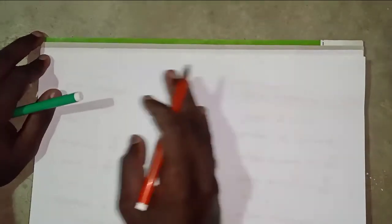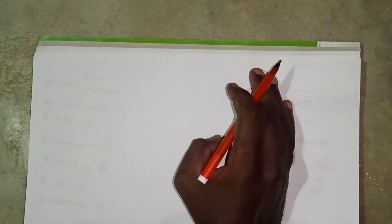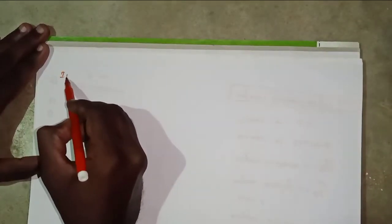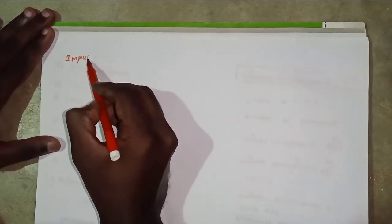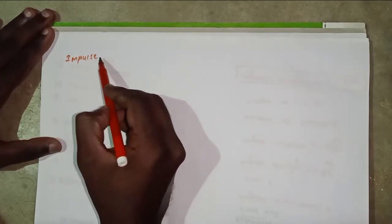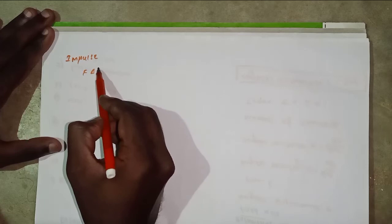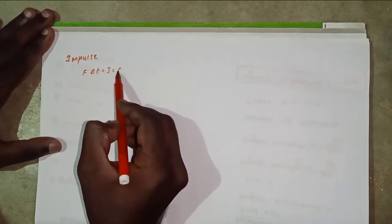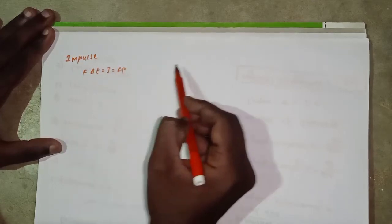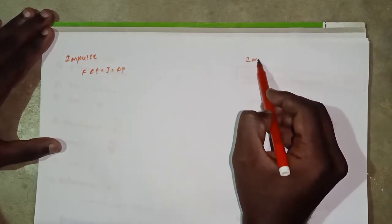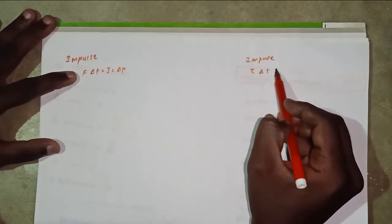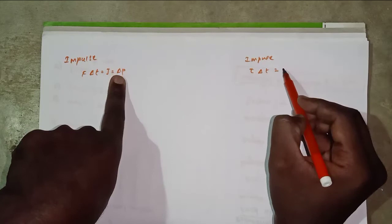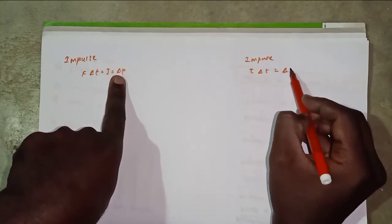Comparison of impulse. Translation impulse: force into time equals change in momentum. Rotation: torque and delta t equals change in angular momentum.